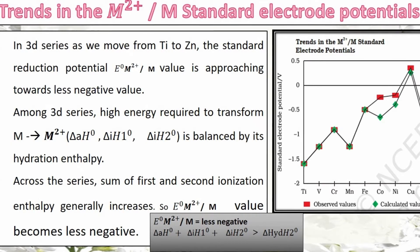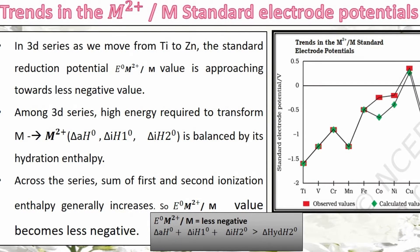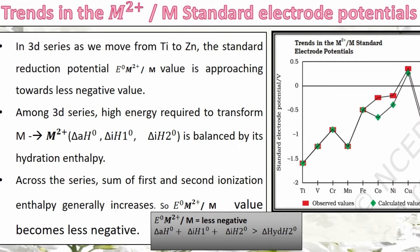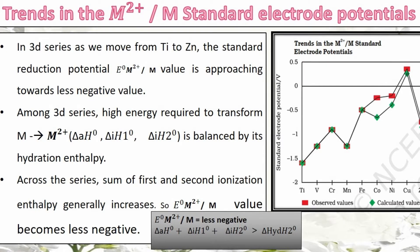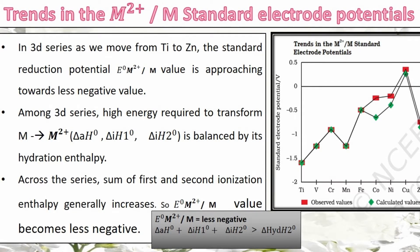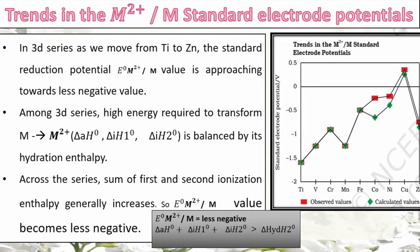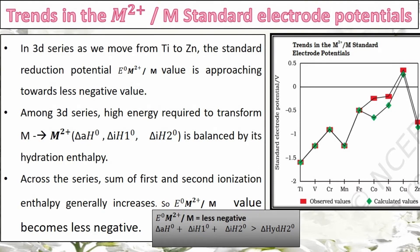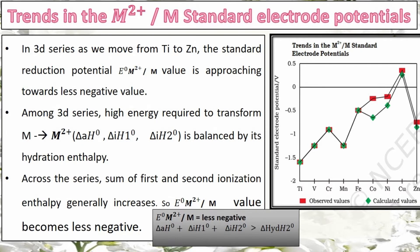Now we will discuss how the M²⁺/M standard electrode potentials of the 3d series vary. In the graph you can see the observed and calculated values of M²⁺/M standard electrode potentials — these two values are in close agreement. As you move from titanium to zinc, the standard electrode potential moves towards a less negative value.